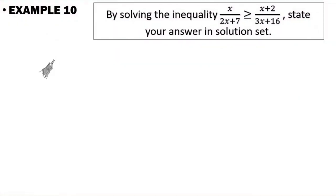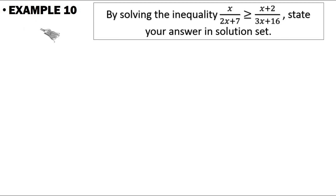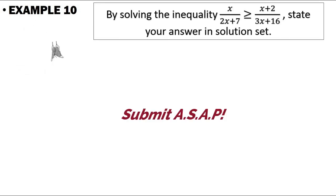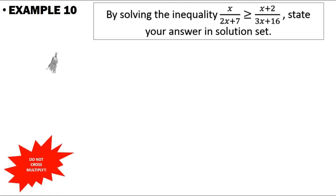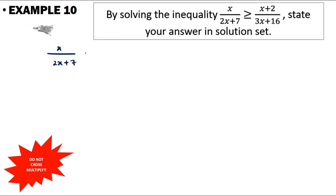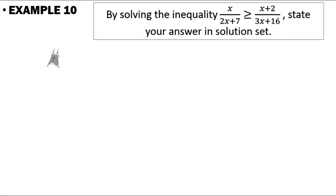Now try this last one by yourself and submit it after watching the video as your attendance proof. Some tips: don't cross multiply; move the expression on the right-hand side to the left so you have minus (x + 2)/(3x + 16) ≥ 0; then equate the denominator. Good luck!